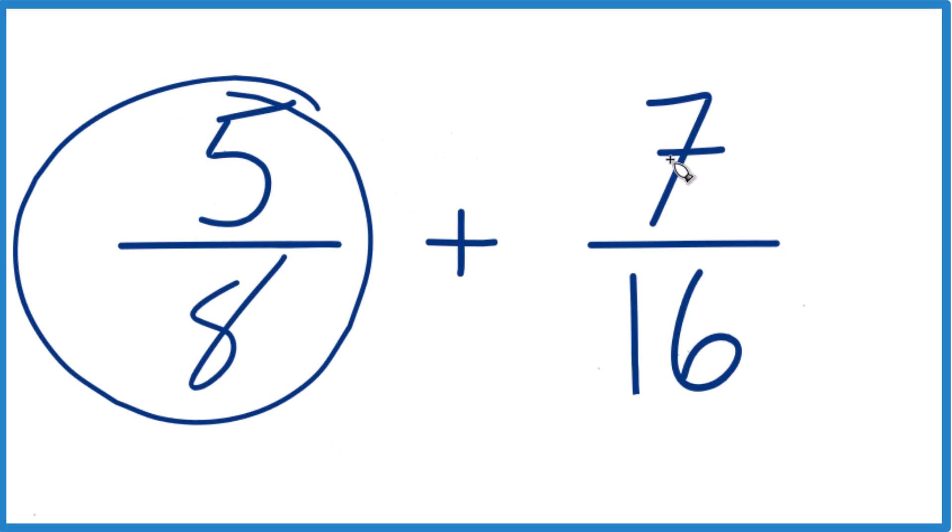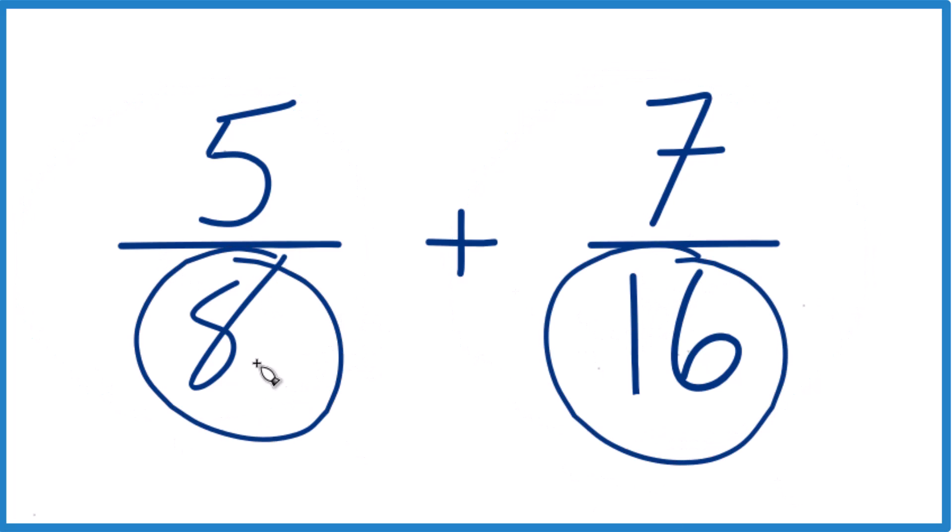If you need to add 5 eighths plus 7 sixteenths, here's how you do it. What we want to do is get a common denominator. So if these numbers are the same, then we can just add the numerators, bring this across, and we're done.